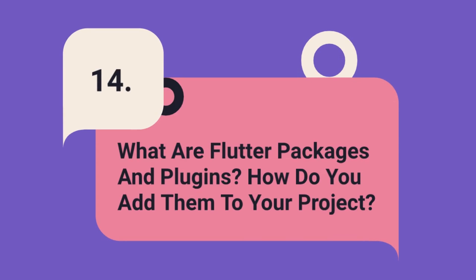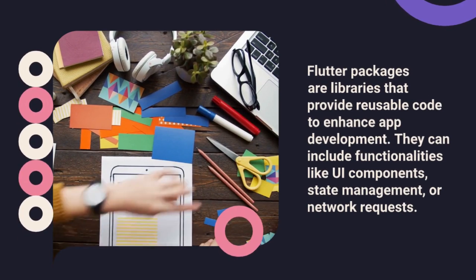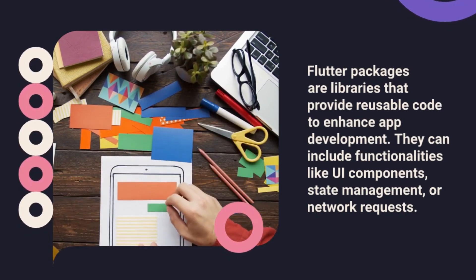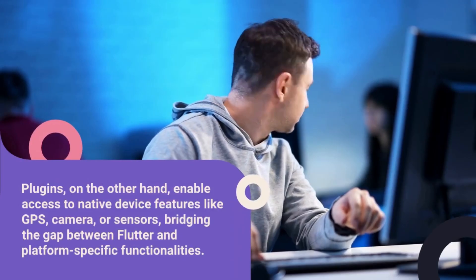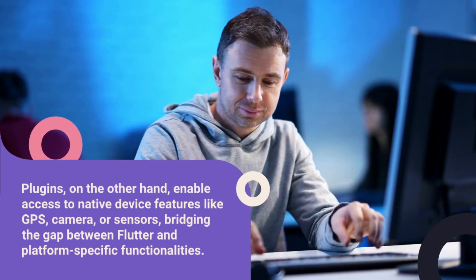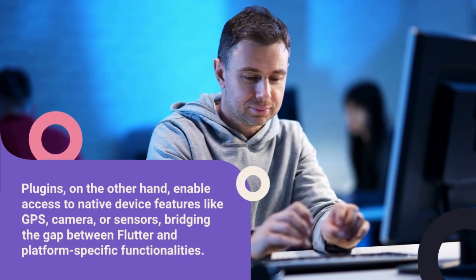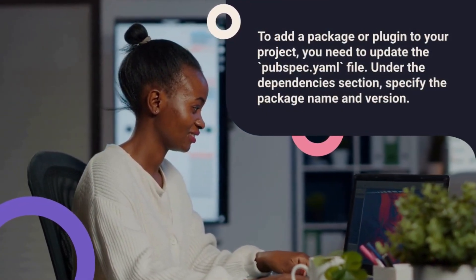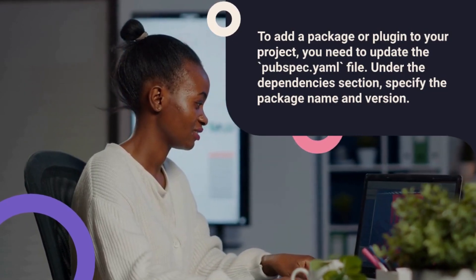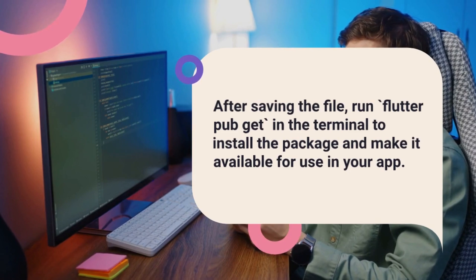Question 14: What are Flutter packages and plugins? How do you add them to your project? Flutter packages are libraries that provide reusable code to enhance app development, including functionalities like UI components, state management, or network requests. Plugins enable access to native device features like GPS, camera, or sensors, bridging the gap between Flutter and platform-specific functionalities. To add a package or plugin, update the pubspec.yaml file by specifying the package name and version under the dependencies section. After saving the file, run flutter pub get in the terminal to install the package and make it available for use in your app.